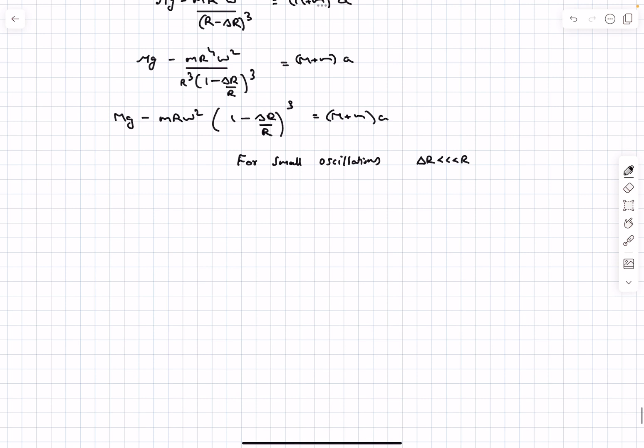As we have to talk about small oscillations, we can say delta R is going to be much less than capital R, and hence we can use a binomial approximation. So m R omega squared, from our first equilibrium condition this is equal to Mg, and this would be 1 plus n times x, where this would be minus 3, so it will be 3 times delta R by R, and we can ignore the second order term. So this would equal capital M plus small m times a.